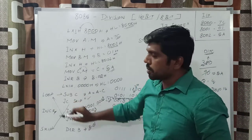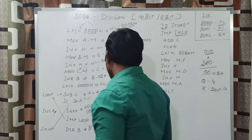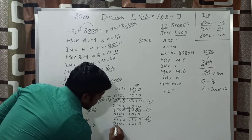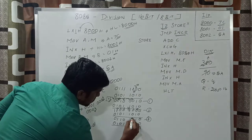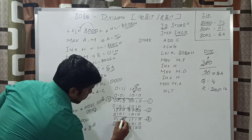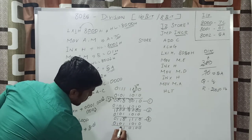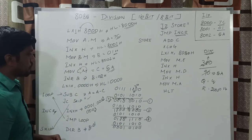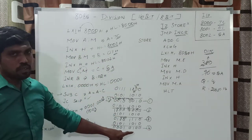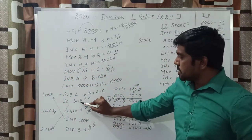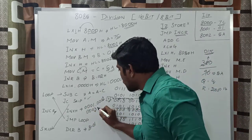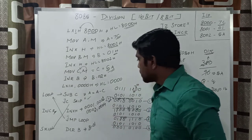Again, the program counter points to the loop instruction: SUB C. The accumulator content is subtracted with the C register content (5Ah). After the fourth subtraction, you get the result 14h. You check JC skip — there is no carry, so it executes the next instruction INX H. Now the HL pair value is 0004h. Then JMP loop — without checking any condition, it goes to the loop label.